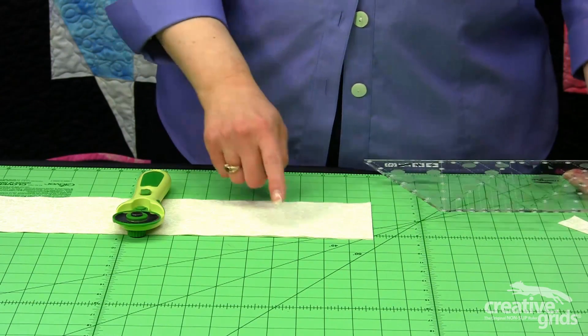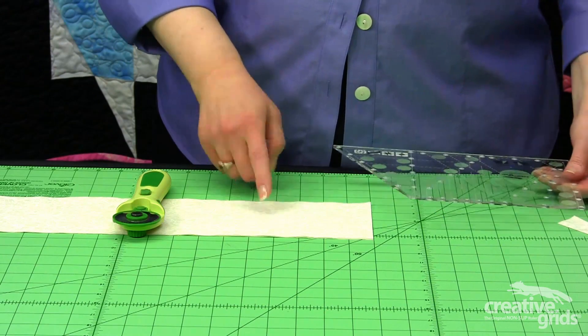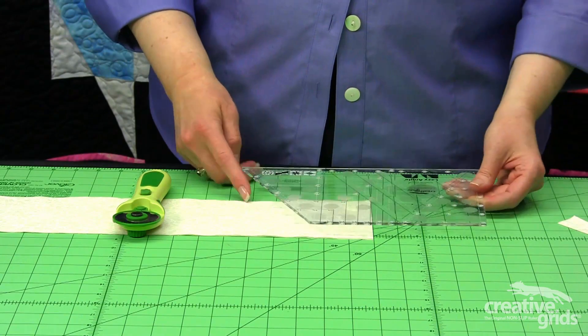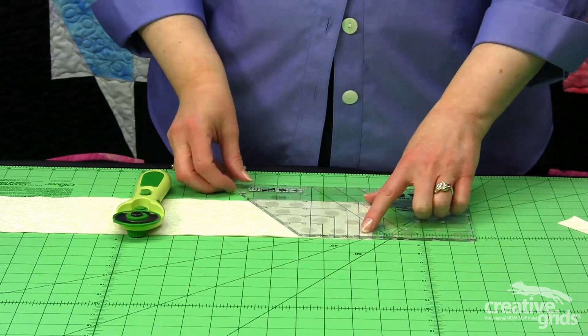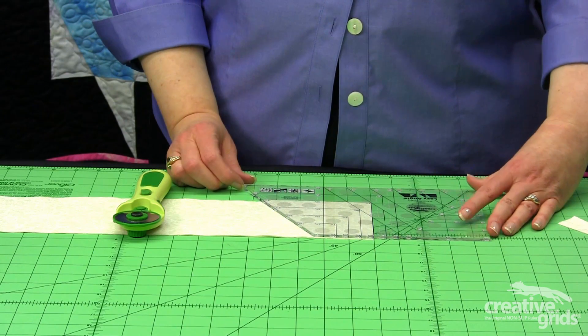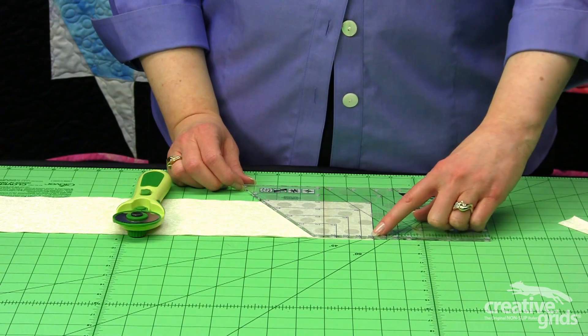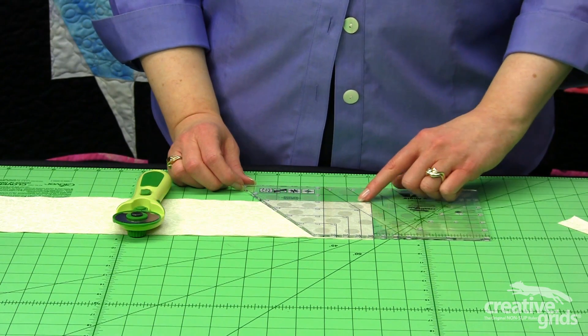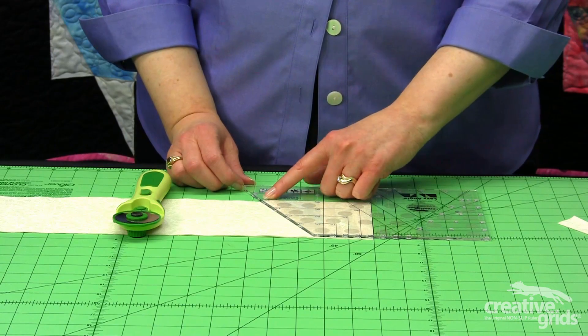For the first cut, we have a squared edge to the strip, so we need an angled cut. We're going to find the 4 1/2 inch mark on the tool that matches what our fabric is doing. So here we've lined up 4 1/2 on the ruler with the edges of the 4 1/2 inch strip.